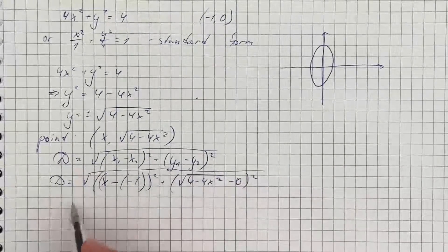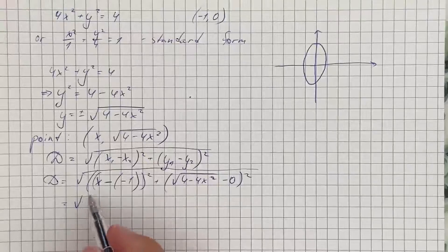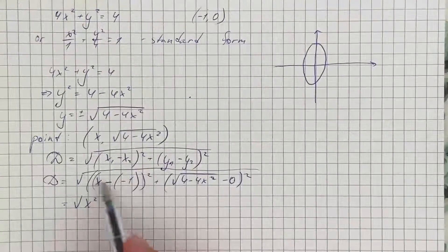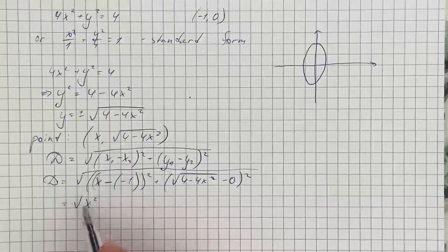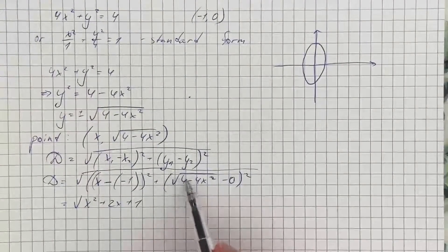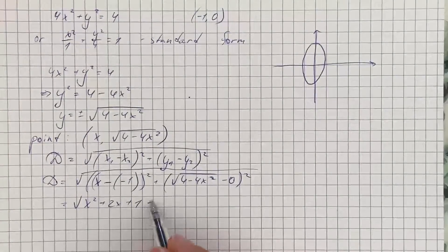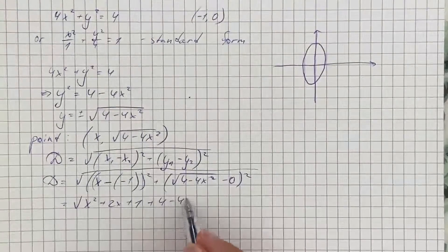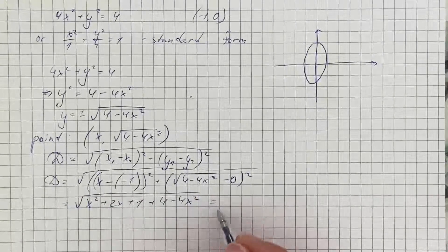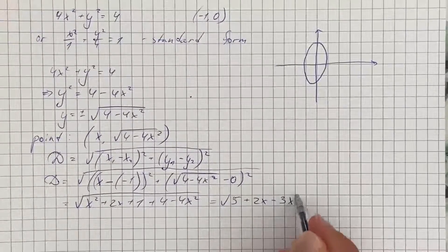After simplifying, we have x plus 1 squared, which expands to x squared plus 2x plus 1, and for the second term we can eliminate the square root to get plus 4 minus 4x squared. Combining these, the distance equals the square root of 5 plus 2x minus 3x squared.